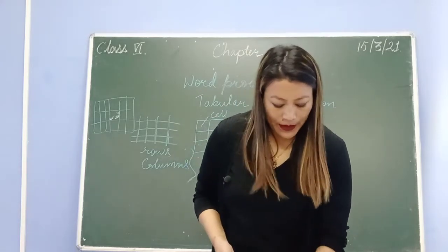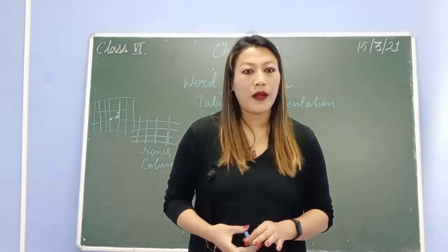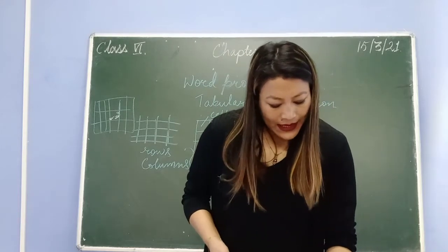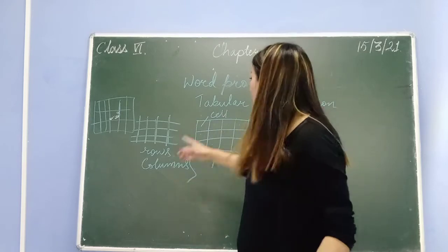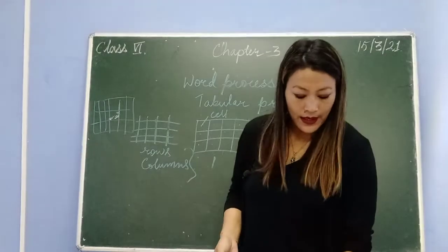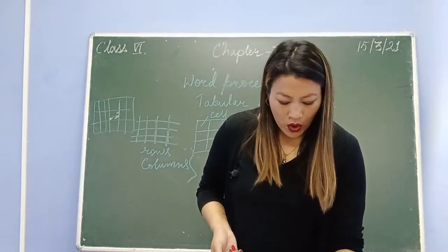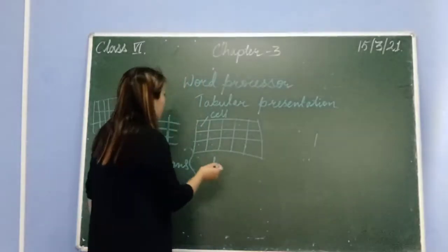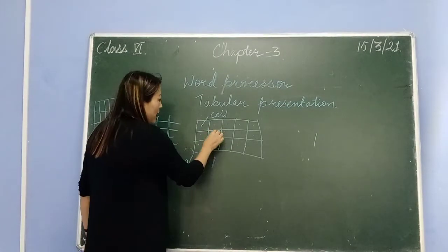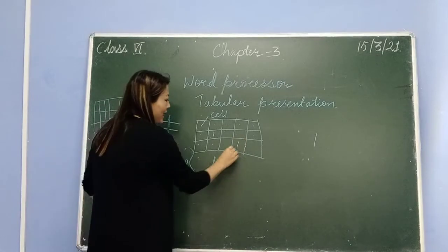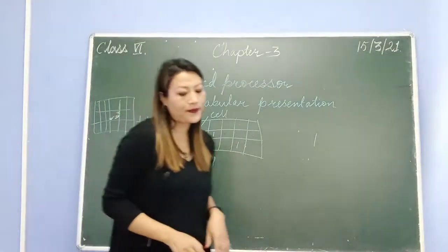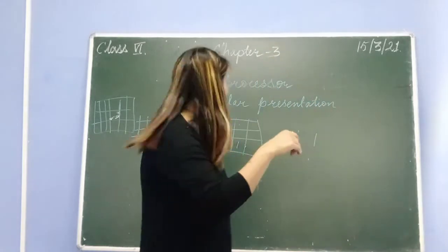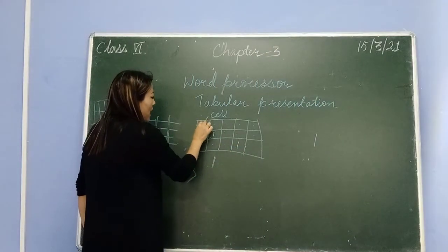Once you finish inserting the table, you need to enter data. Adding data to the rows or columns of a table is very easy. You can enter data by clicking with the mouse on the cell where you want to type and then start typing. To move from one cell to another, use the Tab key on the keyboard.